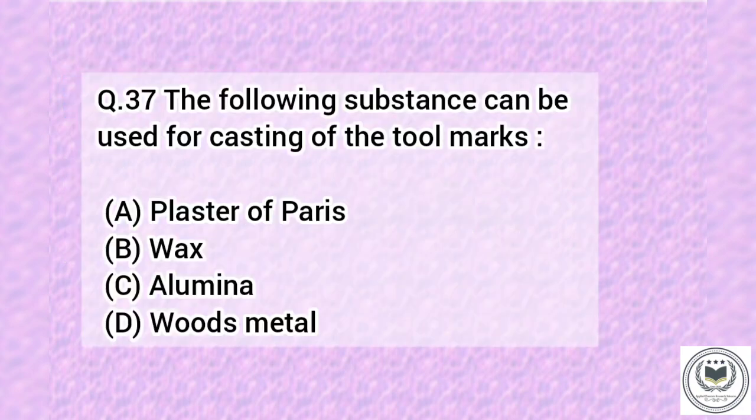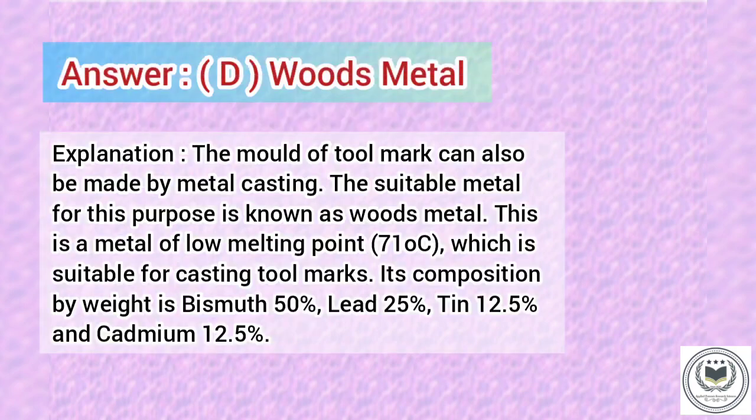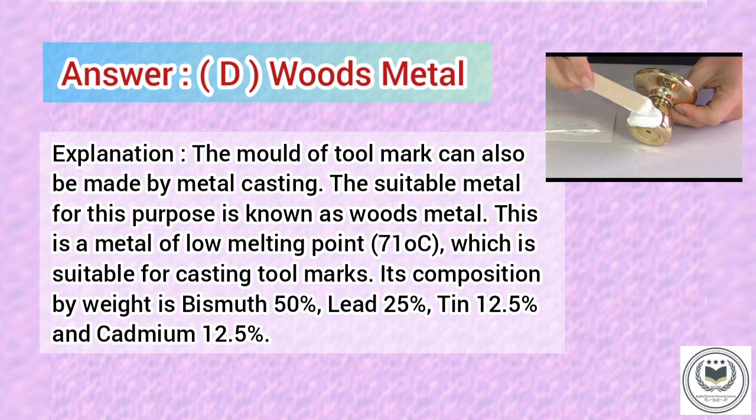Question 37. The following substance can be used for casting of tool marks. Option A: Plaster of Paris. Option B: Wax. Option C: Alumina. Option D: Woods metal. Answer is Option D, Woods metal.